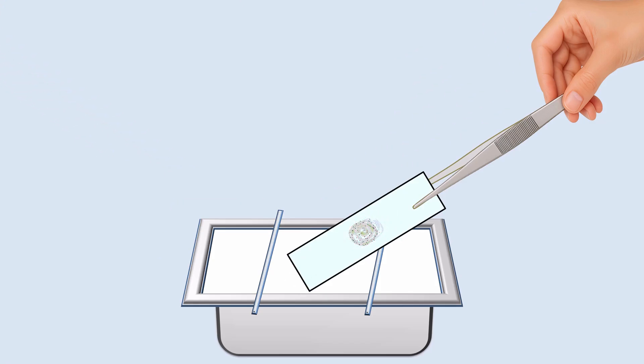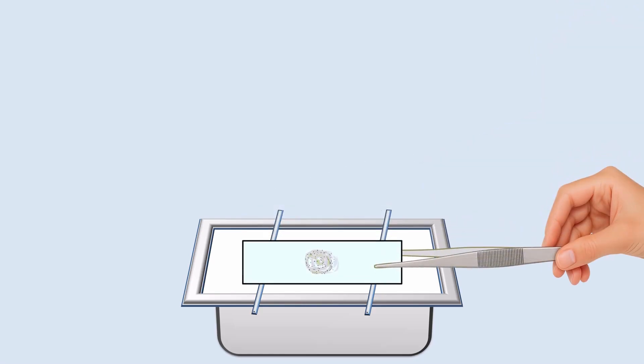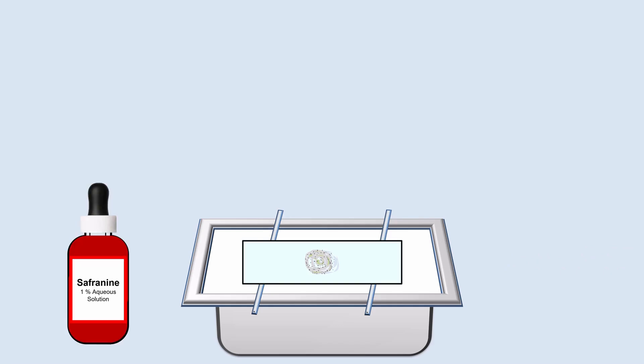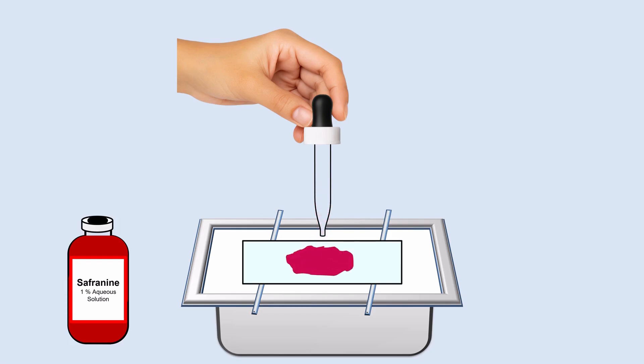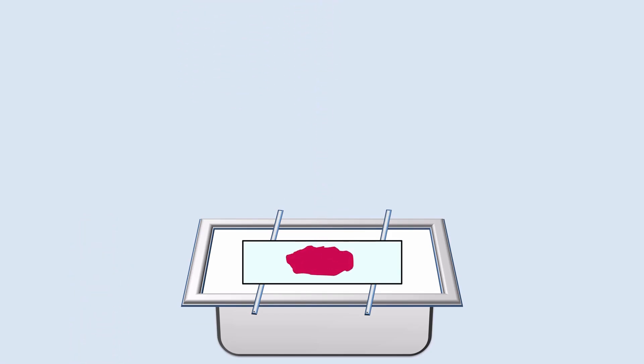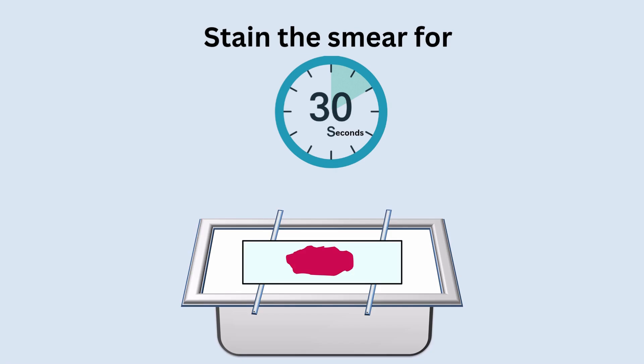After washing is over, place the slide on the staining tray in a horizontal position. Now we are going to do the counterstaining with safranin. Using a dropper, take safranin from the bottle and gently flood the smear, ensuring the entire area is fully covered. Allow the safranin stain to sit on the smear for 30 seconds.